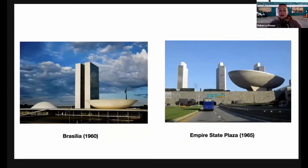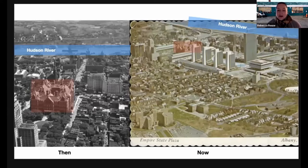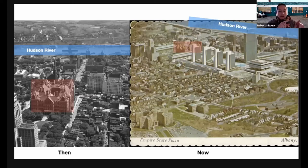This came at a huge cost. A 1948 aerial photo shows what was there before: a vibrant multicultural, Brooklyn-like neighborhood of brownstones and row houses and mixed-use commercial development, which Rockefeller declared a slum, seized by eminent domain, and razed to the ground, displacing roughly 9,000 people. Because these images are taken from different angles, I've overlaid the 19th-century capital building in a red rectangle and the Hudson River in blue so you can orient yourself to see what was there and how it looks now.